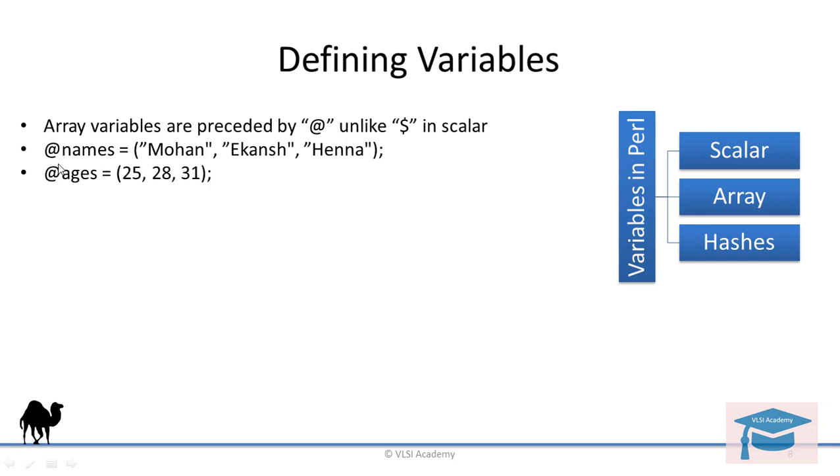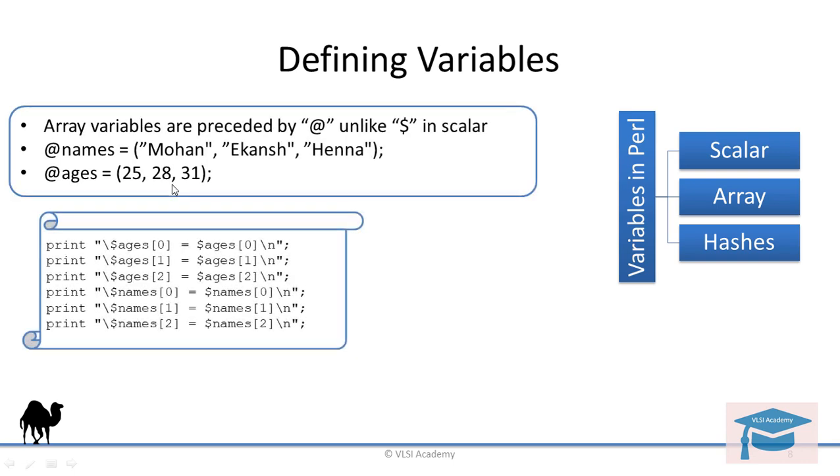Let's see another type of array. Here age is the name of array and these are values. 0th index contains 25, first index contains 28, second index contains 31. If you want to print them in code, this is how you can print. Print \$ages[0] is equal to $ages[0]. This will give you the first value at the 0th index in array of ages. So 25 will be printed, ages[1] will print 28 and ages[2] will print 31.